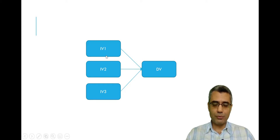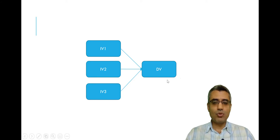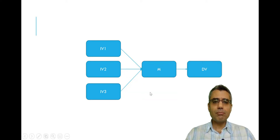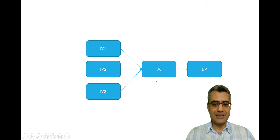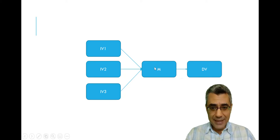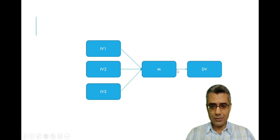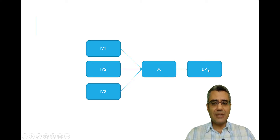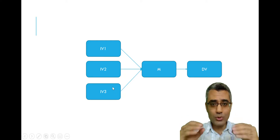Another issue is that in regression analysis, each variable can play only one role — either independent or dependent. But in many models, one variable may play both roles at the same time. For example, the variable M is an independent variable for DV — the single-headed arrow means M has an impact on DV — but at the same time, M is a dependent variable for the other three factors. So it's playing both roles simultaneously.